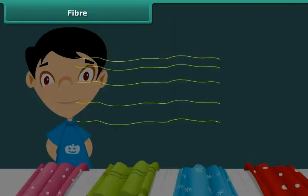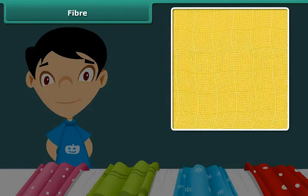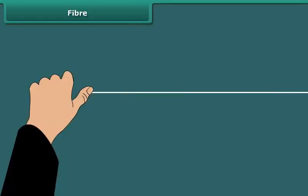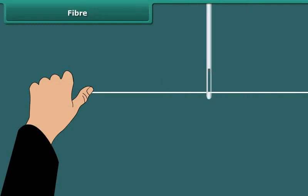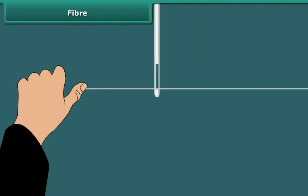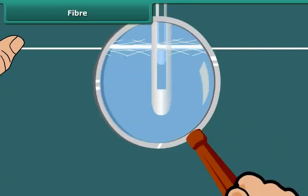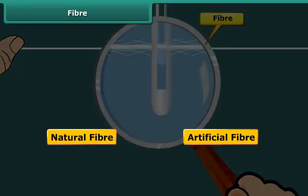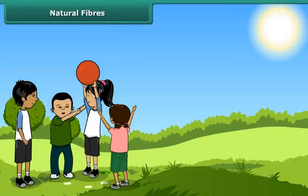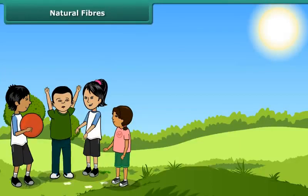These thin yarns are made up of still thinner strands called fibers. To understand this, take a piece of fabric and take out a yarn from it. Press one end of the yarn with your thumb, then scrub the other end along its length with a needle. You can see that the yarn splits into thin strands — these thin strands are fibers.